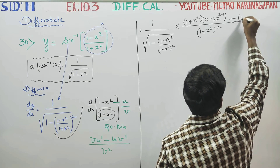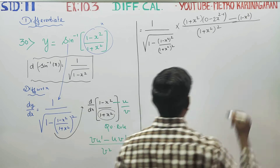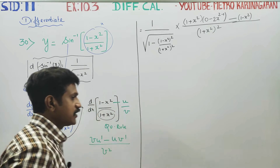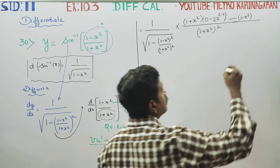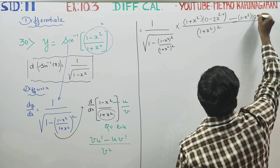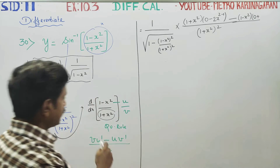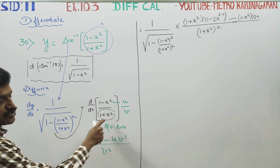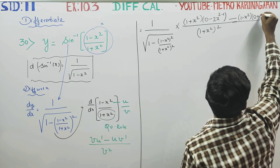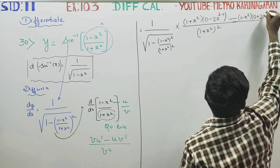u is (1 minus x square). Now for v dash, we differentiate v, which is (1 plus x square). The constant 1 differentiates to 0, and x square differentiates to give 2x.